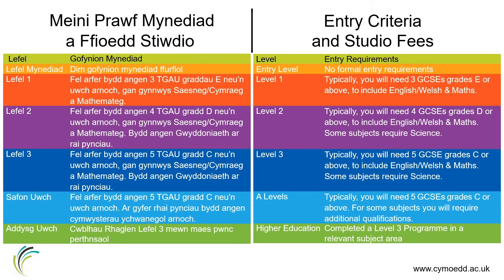Here you can see an overview of the typical entry requirements for the different course levels across the college. For the UAL Level 2 diploma, you will require either four GCSEs at grades A* to D including English or Welsh and Maths or Numeracy, or a Level 1 diploma at merit grade or above. For the UAL Level 3 diploma, you will need five GCSEs at grades A* to C including English or Welsh and Maths, or a Level 2 diploma at merit grade or above in a relevant subject area, including Level 2 Essential Skills Wales.